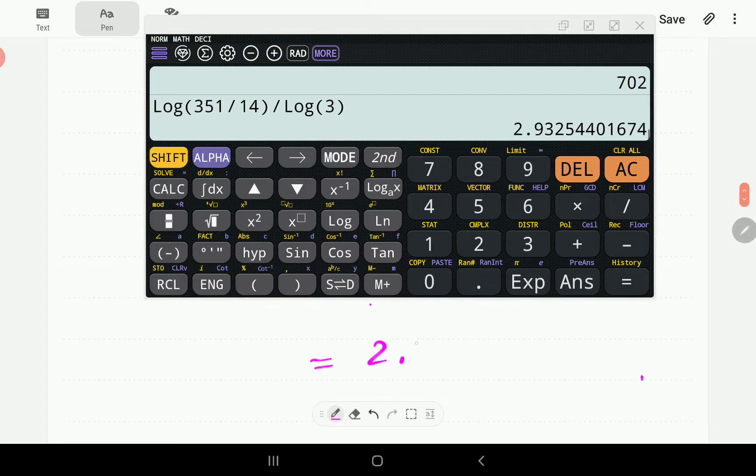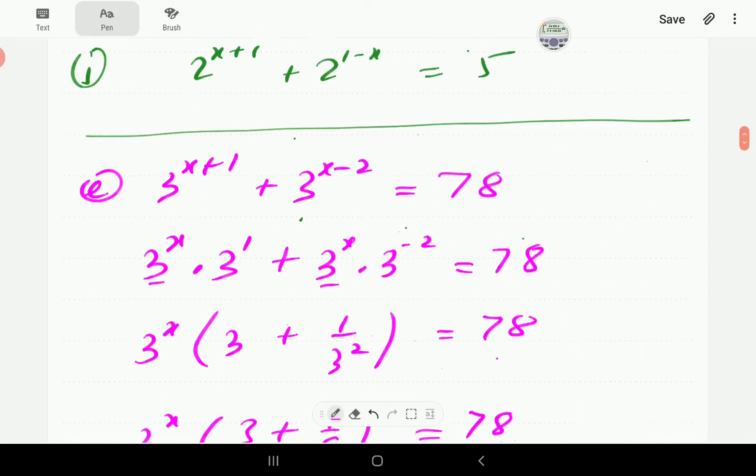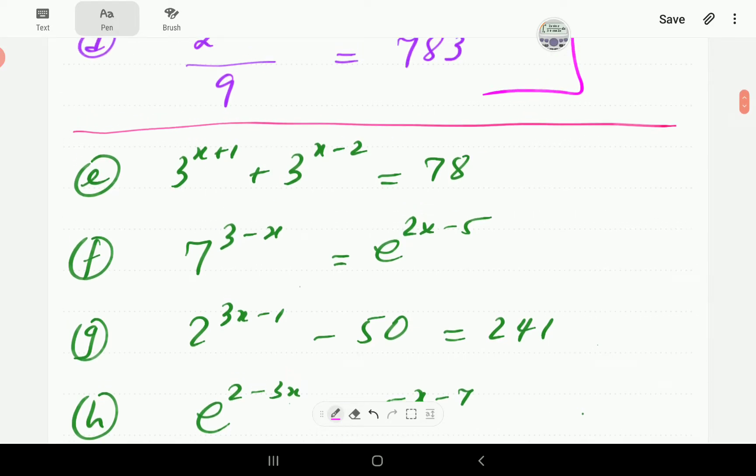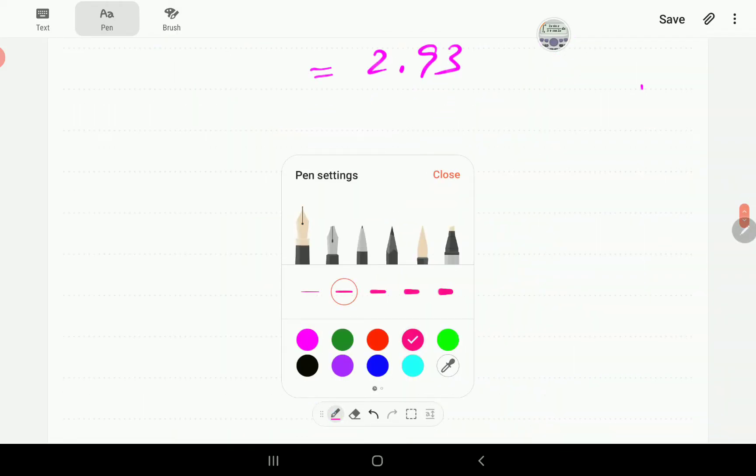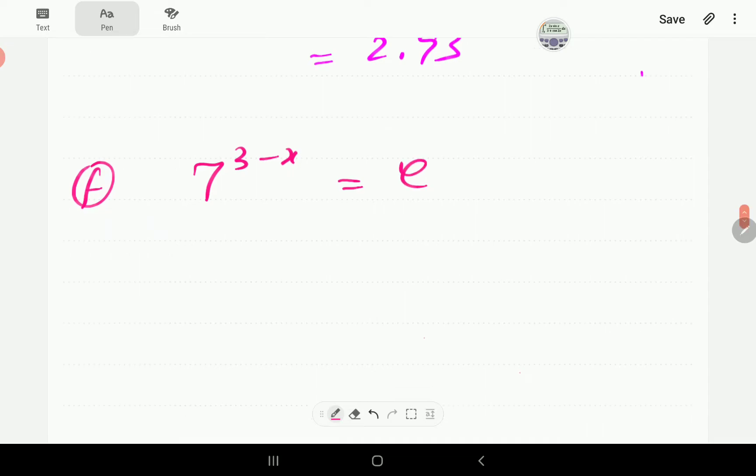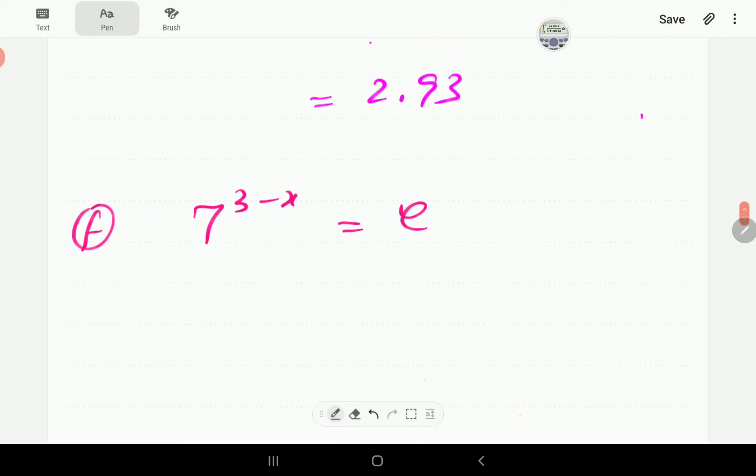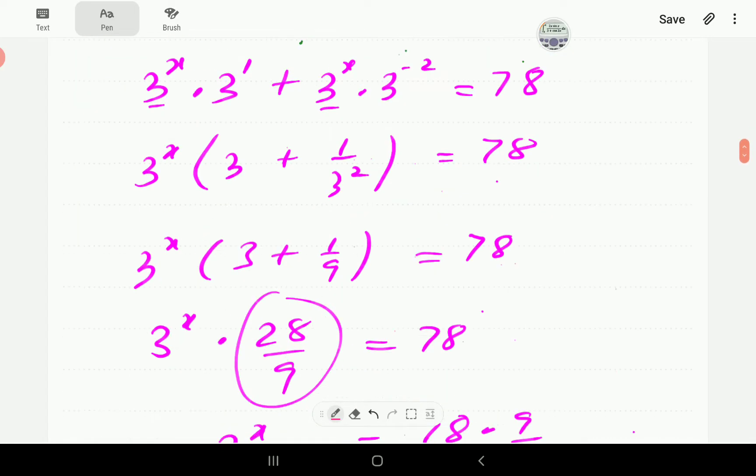So that's going to be 2.93 is our solution. So that was example number E. We're now going to go to example number F. 7^(3-x) equal to e^(2x-5).